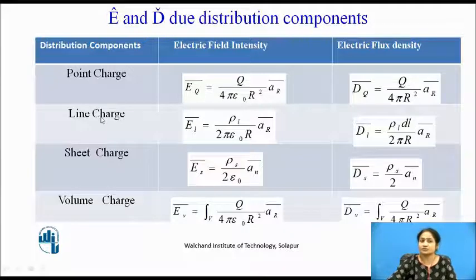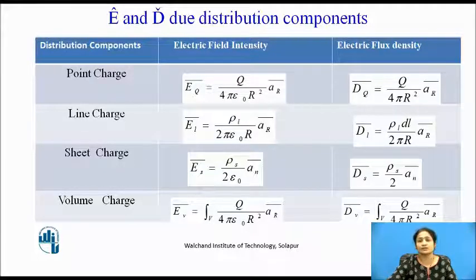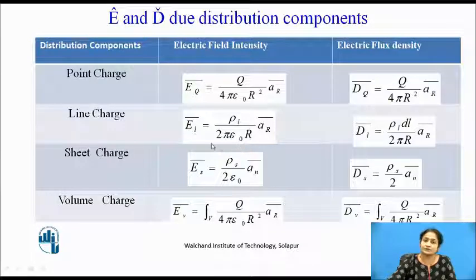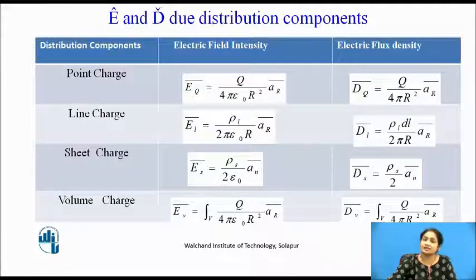For line charge distribution, Q is replaced by ρL, the line charge density, which is charge per unit length. The electric field intensity due to the line charge is ĒL = ρL / (2πεr) · ār. Moving ε₀ to the left-hand side gives the electric flux density due to line charge: D̄L = ρL / (2πr) · ār.